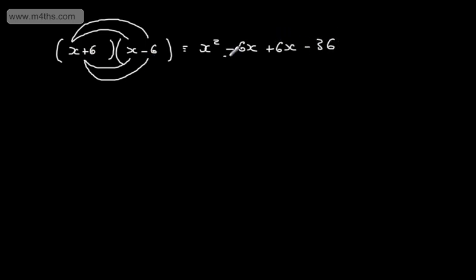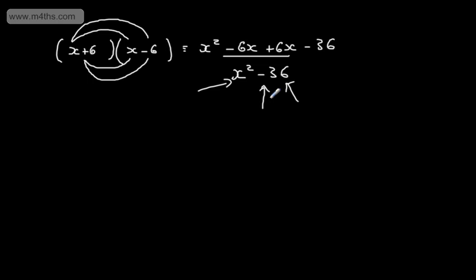If we consider these two terms in the middle, they are going to cancel out, therefore we've got x squared minus 36. X squared is a square number, 36 is a square number, and we have the subtraction, which is going to be our difference. So what we would look to do is spot if we could factor a quadratic expression as the difference of two squares.